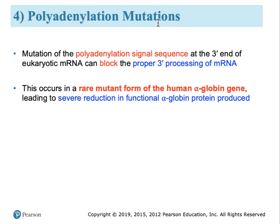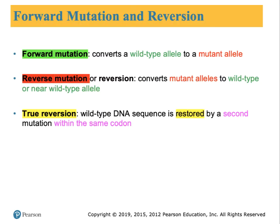Mutations at the far end of the gene in the polyadenylation region can also have consequences — they normally block proper processing of the 3' end of the messenger RNA, leading to a shorter life expectancy once it leaves the nucleus. With reference to the wild-type sequence, a forward mutation converts the wild-type DNA to a mutant DNA. If it's a gene, it converts the wild-type allele to a mutant allele. A reverse mutation means the opposite — it converts a mutant allele back to the wild type, though sometimes not entirely, producing near wild-type alleles.